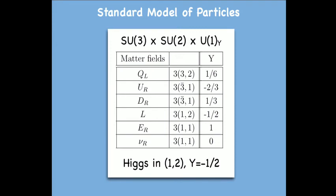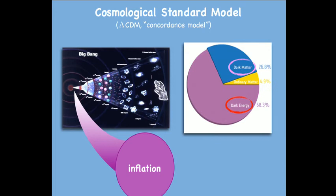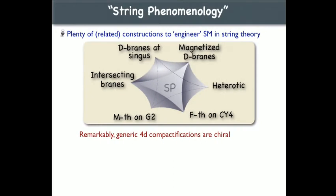Right-handed neutrinos are singlets under SU(3), SU(2), and have zero hypercharge. Recently it has been clear that there is a cosmological standard model as well that explains the history of the universe. We understand it pretty well up to little things, which are the presence of dark matter and energy. Mostly I will focus on particle physics, and the little bit I will talk about cosmology will have to do with a particular kind of models of inflation that fits well with the things I'll be explaining.